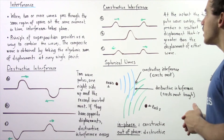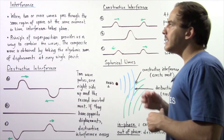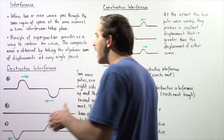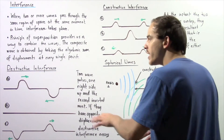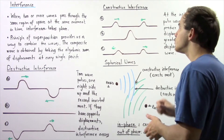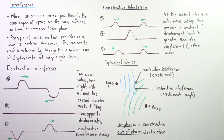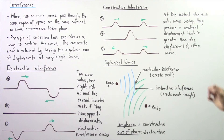Now let's talk about constructive interference. In many ways, it's the opposite of destructive interference — where destructive interference causes two waves to cancel one another out, in constructive interference they add together to create a larger amplitude wave. At the instant that the two waves overlap, they produce a resultant displacement greater than that of either individual wave.